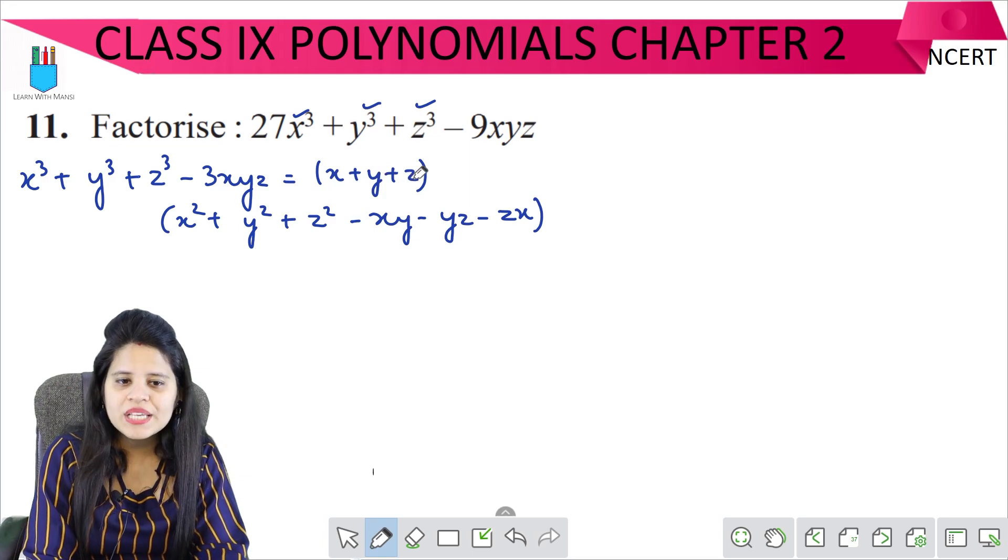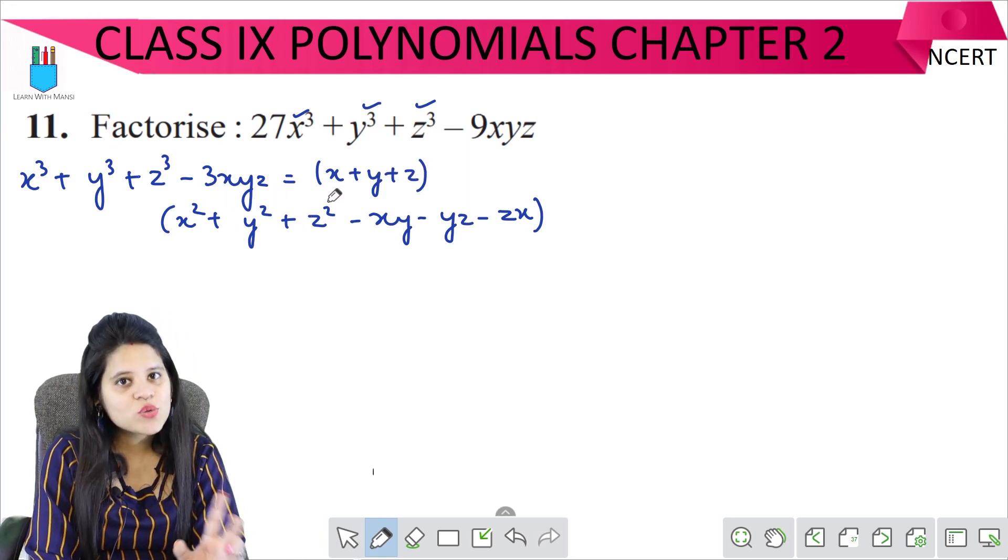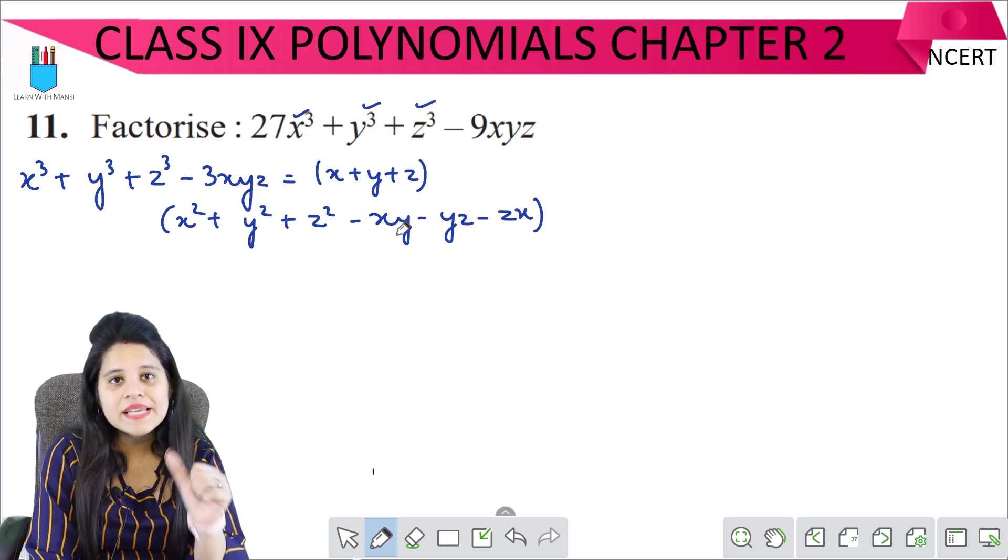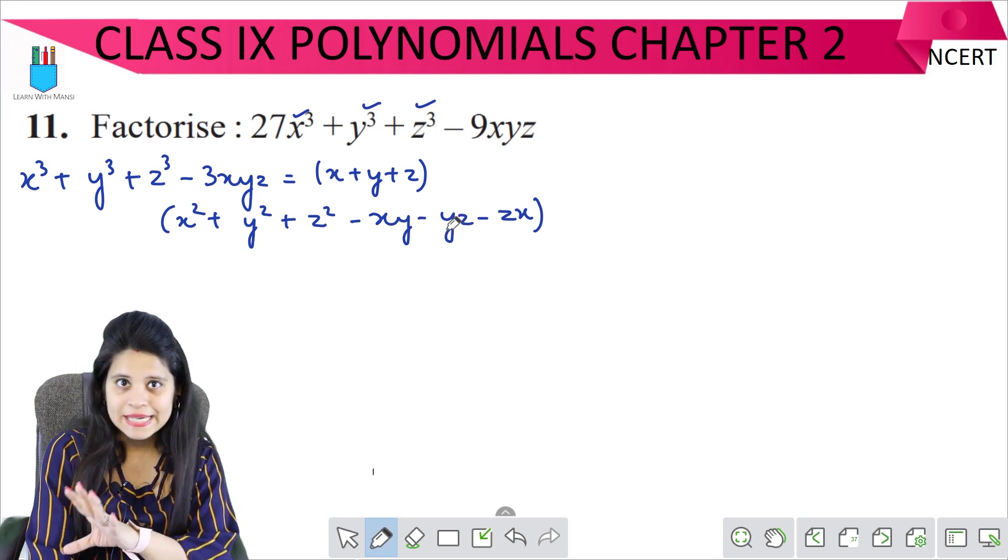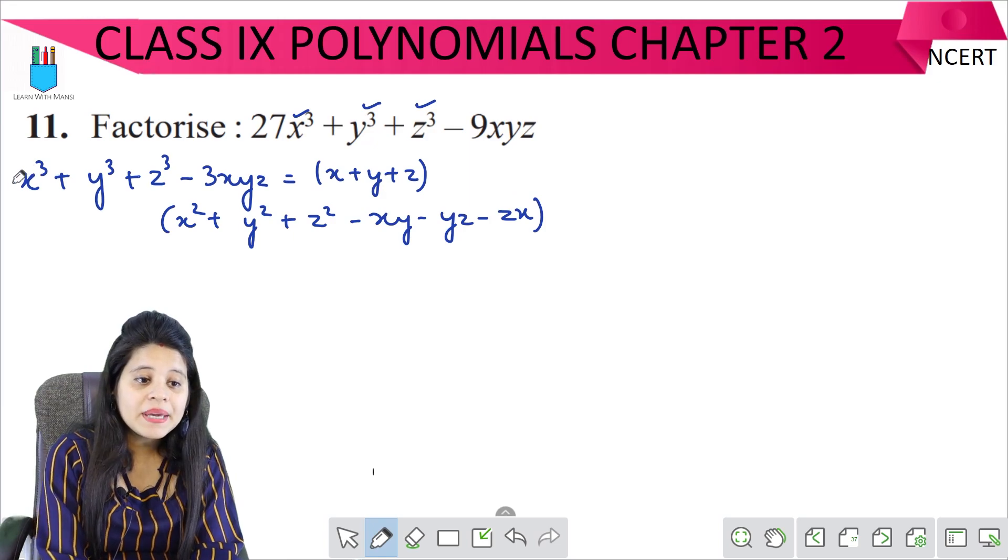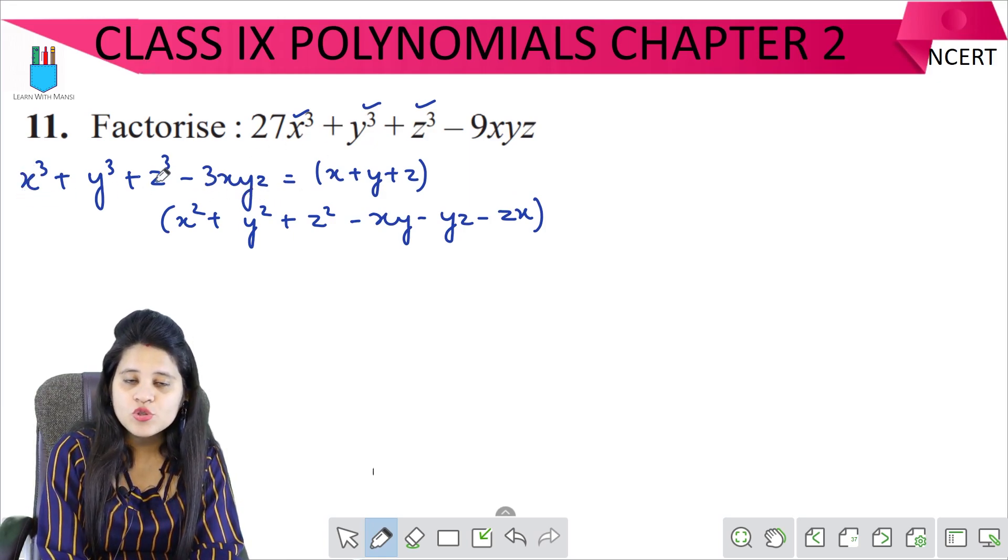If I remember x plus y plus z, then x², y², z² and minus xy, yz and zx. This is the identity. Now this is given in this form, so first let's write it like this.